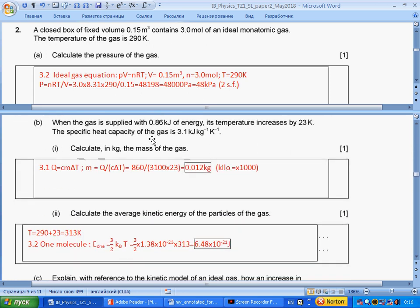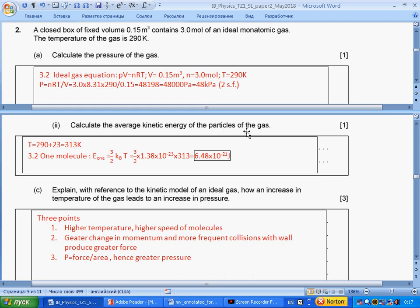When the gas is supplied with energy, its temperature rises. The specific heat capacity is given, calculate in kilograms the mass of the gas. Section 3-1: Energy supplied equals mc·ΔT. We rearrange for mass and give value with two significant figures. Calculate the average kinetic energy of the particle of the gas. Temperature will be calculated because it is increased from 290 by 23. In section 3.2, energy of one molecule equals 3/2·k_B·T, where k_B is Boltzmann constant. You take Boltzmann constant from data booklet, you should not memorize it, and you get answer with three significant figures.